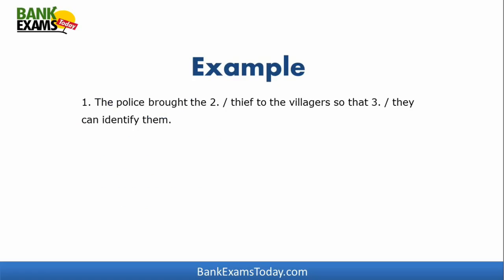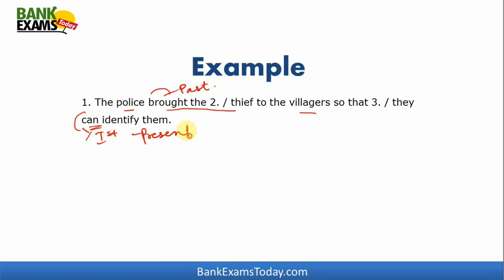Starting from a basic example: "The police brought the thief to the villagers so that they can identify them." Here, 'the police brought the thief' is in the past tense. Then 'so that they can identify them' — 'can' is the present form of the verb. Since the sentence starts in the past, it should end in the past as well. So 'can' should be replaced by 'could.' The error is in part three.